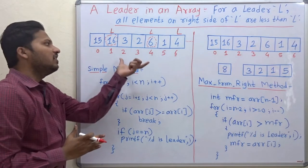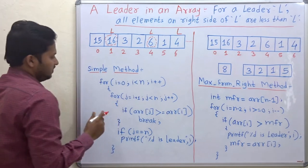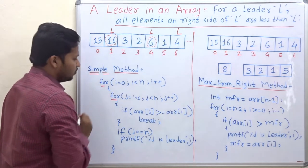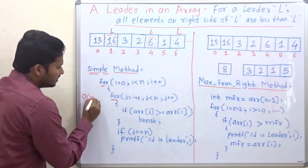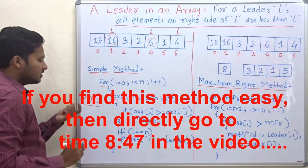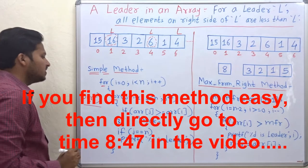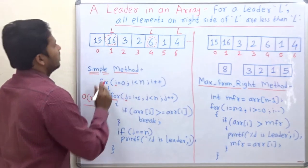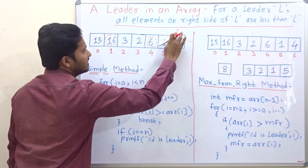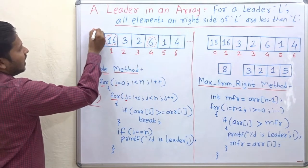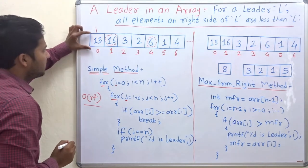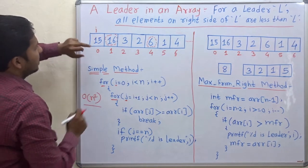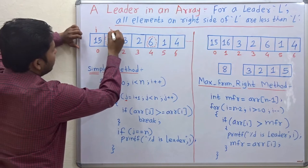Let us see how to find out the leader using the code. The first method is the simple method which uses two for loops. The time complexity of this method is O(n²). Here i and j are the variables which trace the array. i traces the element for which we are going to check the leader condition, and j traces each element after i.